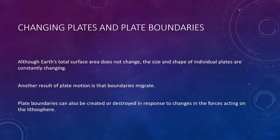Although Earth's total surface area does not change, the size and shape of individual plates are constantly changing. For example, the African and Antarctic plates are mainly bounded by divergent boundaries — they are sites of seafloor-spreading production, and so they are continually growing in size as new lithosphere is added to their margins. By contrast, the Pacific plate is being consumed into the mantle along much of its flanks faster than it is being generated along the East Pacific Rise, and thus is diminishing in size.